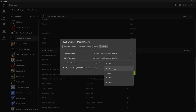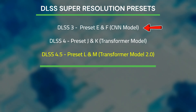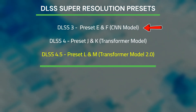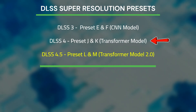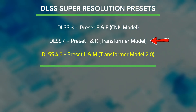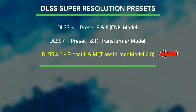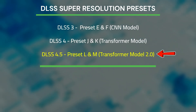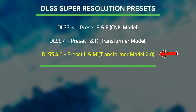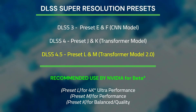Here are the current presets that are most commonly used. DLSS 3 is preset E and F — these were standard across many games a few years ago and utilize the older CNN model, which by today's standards is lacking compared to newer models. Next is DLSS 4, which is preset J and K. These improved upon the CNN model by fixing ghosting, temporal instability, and improving image quality across a wide variety of games thanks to the new transformer model. And now DLSS 4.5 with preset L and M — the latest presets with further reduction to ghosting, flickering, and improved general image quality.